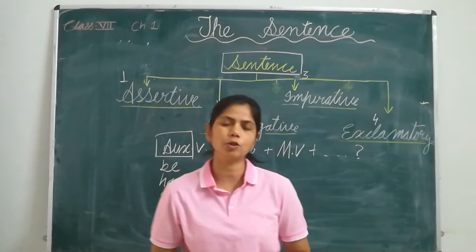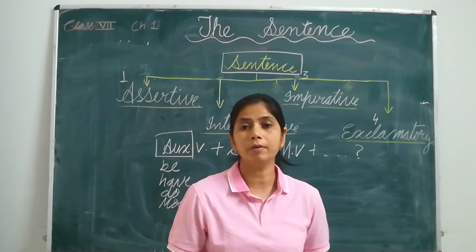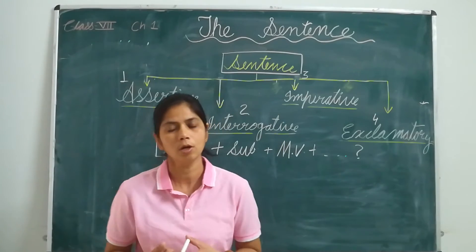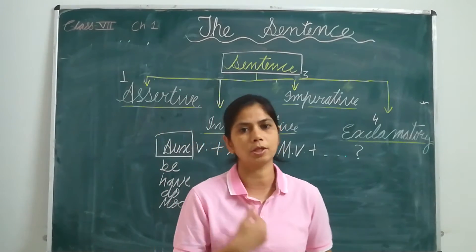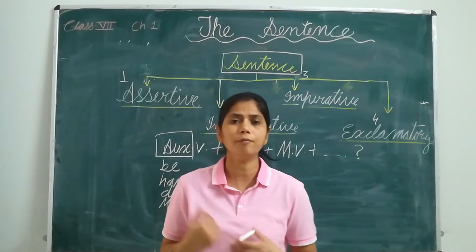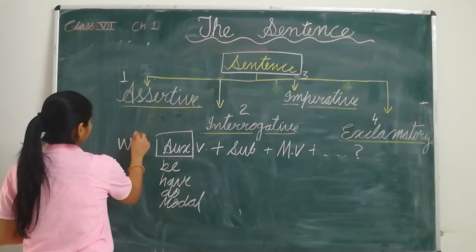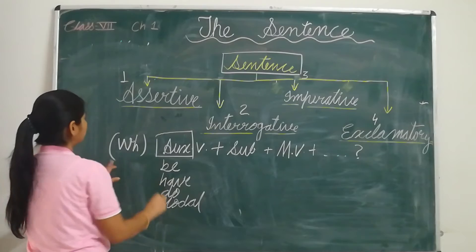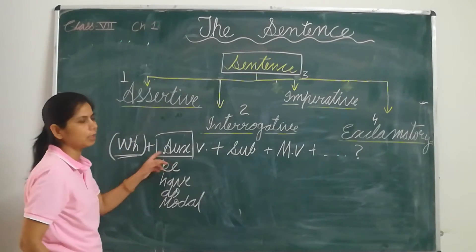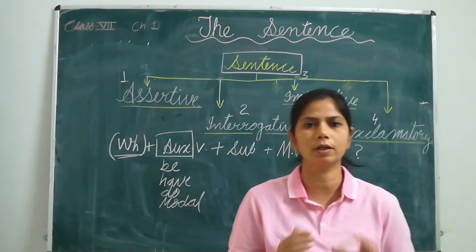The second type of question is WH type of questions. We structure WH questions when we ask or want to know more information — we do not want the answer in yes or no. We want to know information related to time, place, name, or person. When we structure WH questions, we place the WH word before the auxiliary verb. The same structure is followed, but the WH word comes before the auxiliary verb.